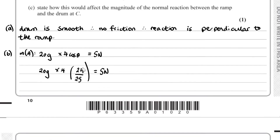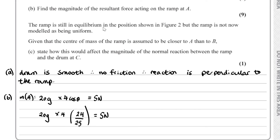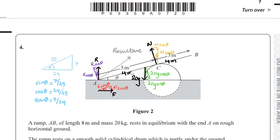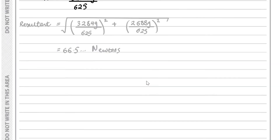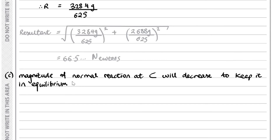For part c, the ramp is still in equilibrium but is no longer modelled as uniform. Given that the centre of mass of the ramp is assumed to be closer to A than to B, we have to state how this affects the normal reaction at C. If the centre of mass is closer to A, the magnitude of the normal reaction at C will decrease to keep the ramp in equilibrium.